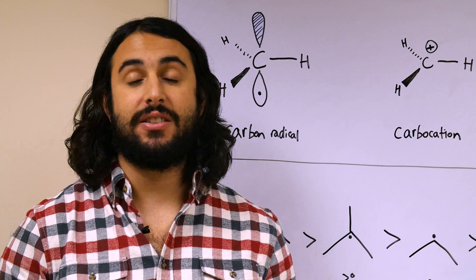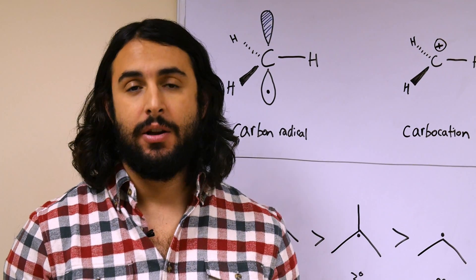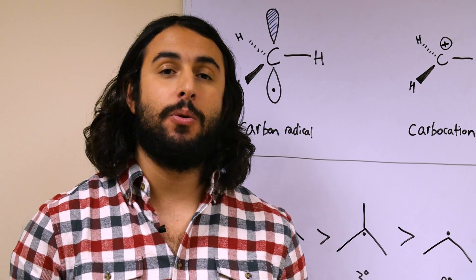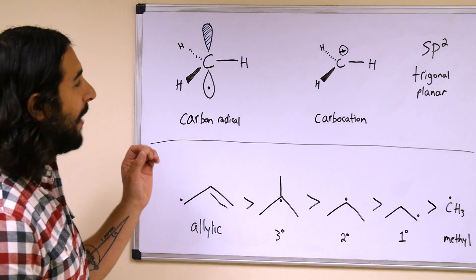We are used to electrons existing in pairs, either within a covalent bond or as a lone pair, but electrons can also be unpaired and these would be called free radicals. So let's learn a little bit about free radicals.